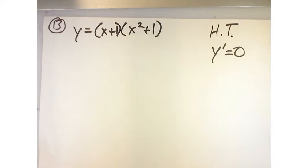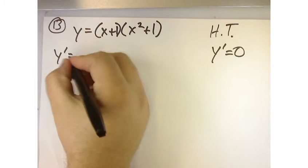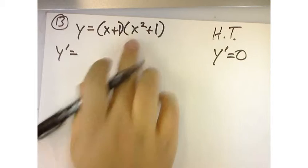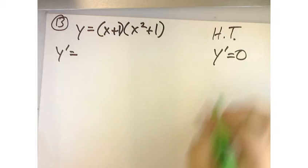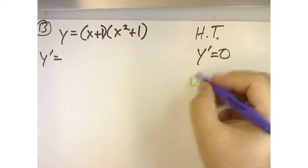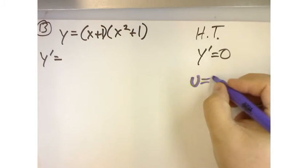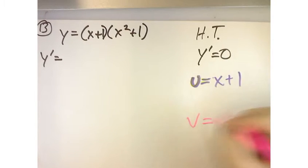So now when I go to do y prime, here's the problem. This is a product. So in order to do the product rule, we've got to separate these two. In other words, we're going to use the uv notation, so we'll say that u is equal to x plus 1, and then we will say v is equal to x squared plus 1.